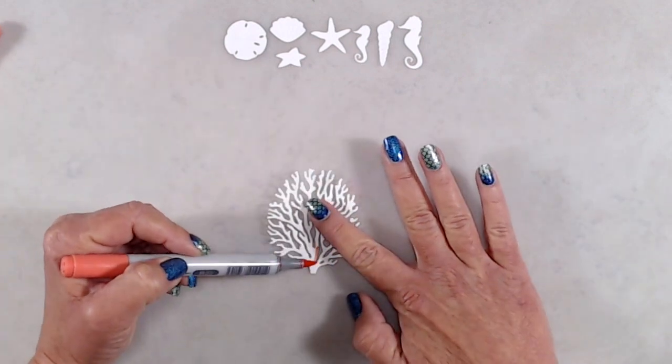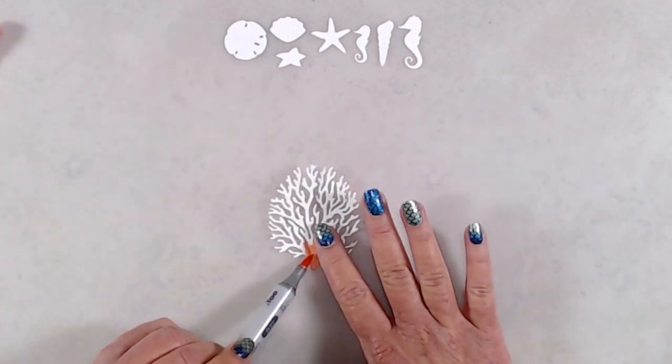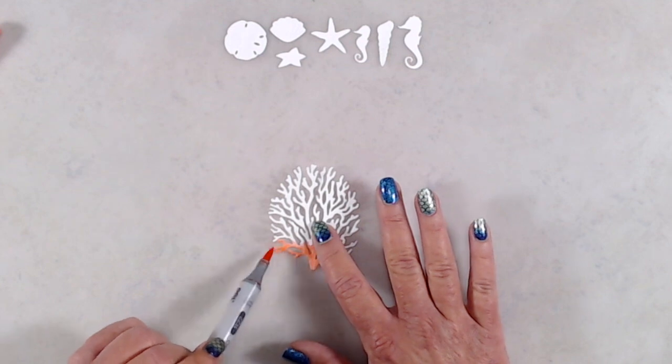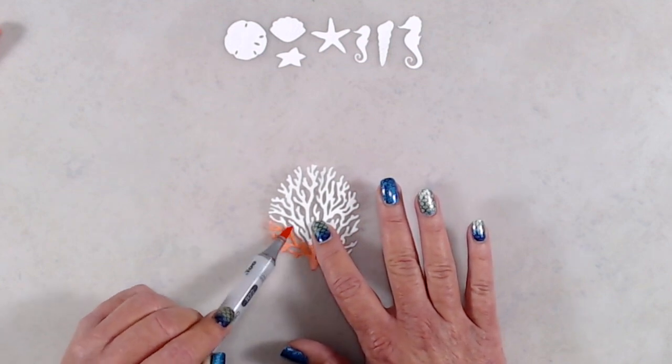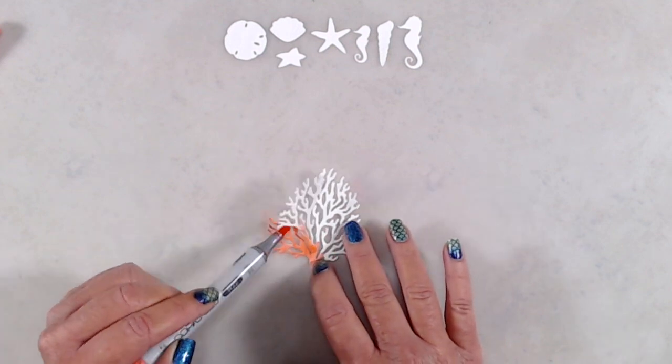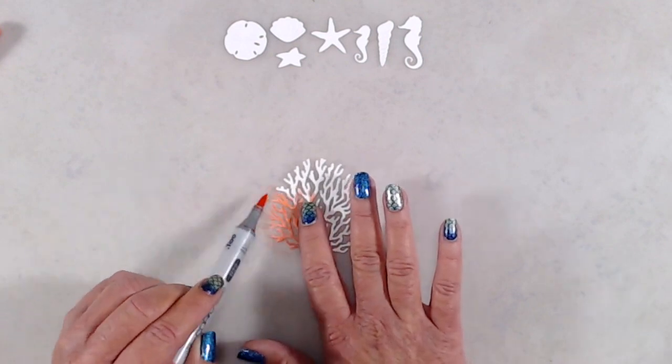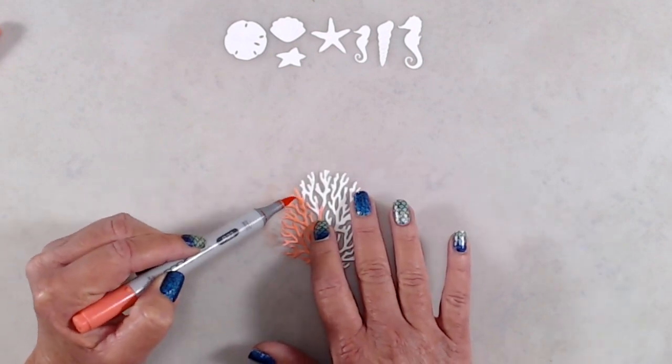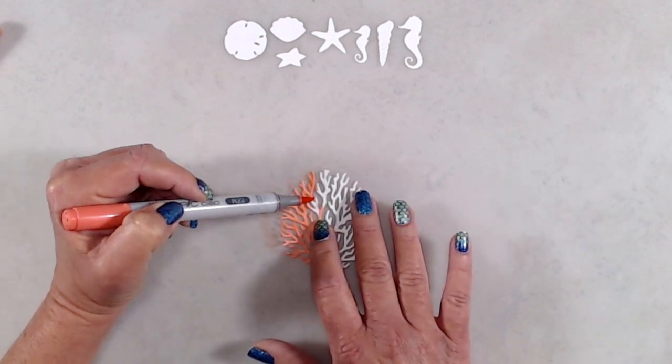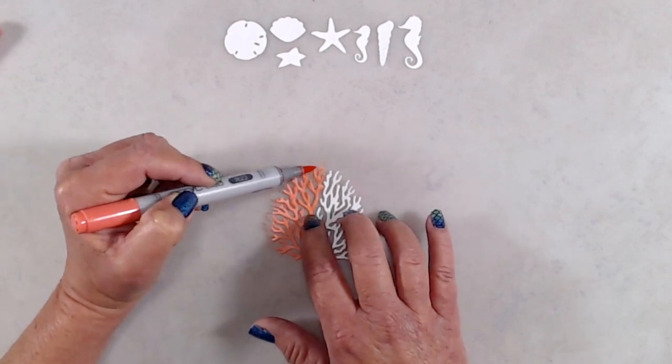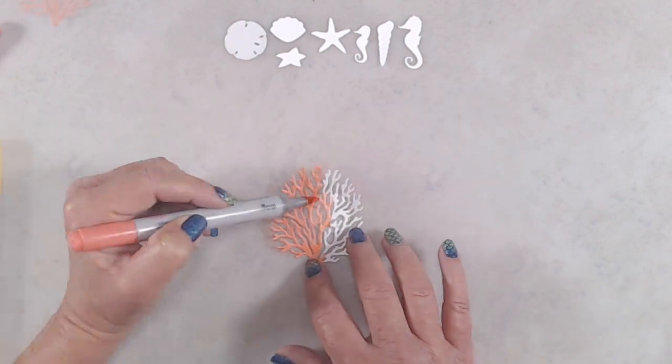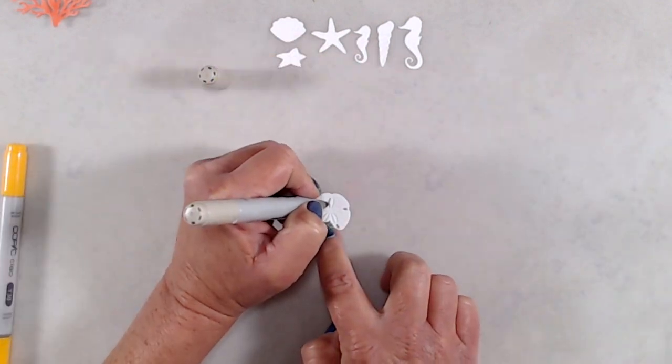Once I was done adding color to my shaker frame, I started coloring in the die cut pieces from the Build an Ocean die set. I really love this die set because of how intricate they are, especially with the two pieces of coral that are in this particular die set. The coloring I did was really very easy. I didn't do anything super fancy.